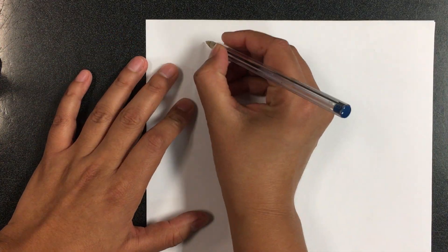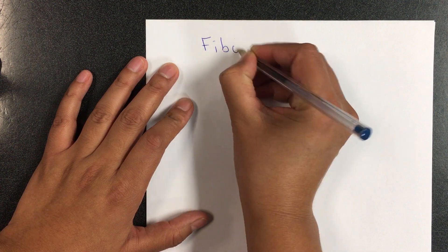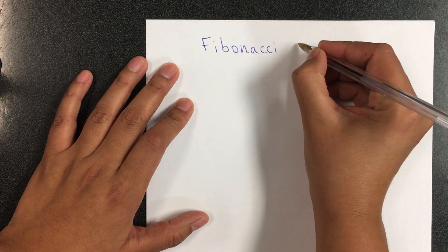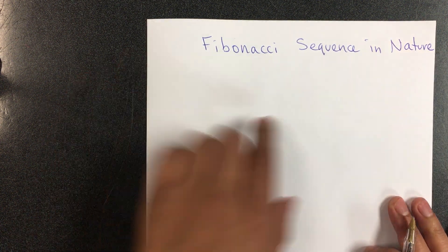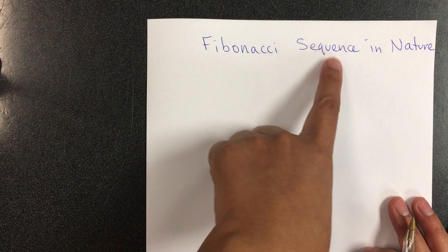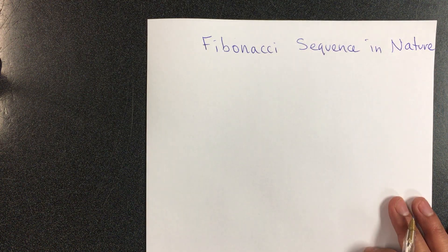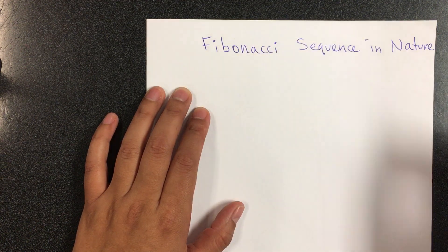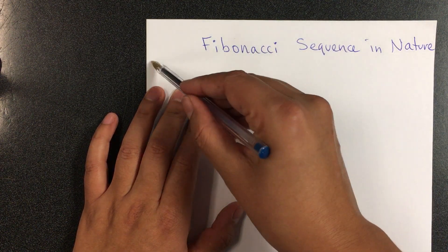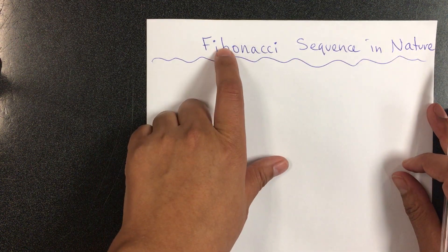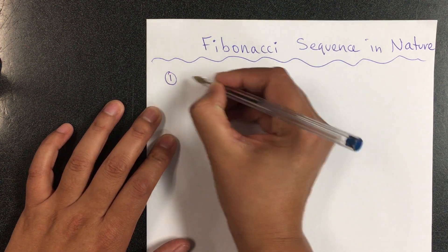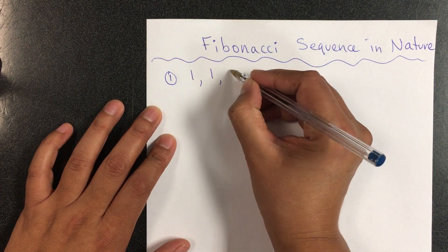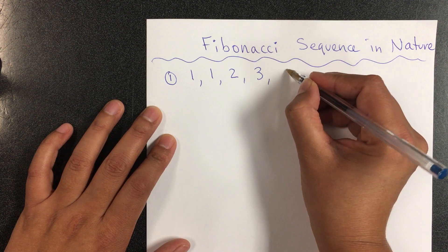Before we start class today, I asked you to watch a YouTube video about the Fibonacci sequence in nature — something like that, I can't remember if it's Fibonacci sequence or Fibonacci numbers in nature, but it just tells you how amazing nature is and how nature knows math. So go ahead and watch it before you watch this video because it's fascinating. The Fibonacci numbers are 1, 1, 2, 3, 5...